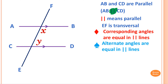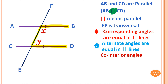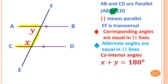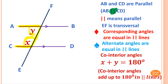Now, angle X and angle Y — they are both inside the parallel lines and the transversal line, so we call them co-interior angles. Co-interior angles look like the letter C. Both angles are inside. Angle X and angle Y can be like this as well — it's like a C — and we know that angle X plus angle Y equals 180 degrees.